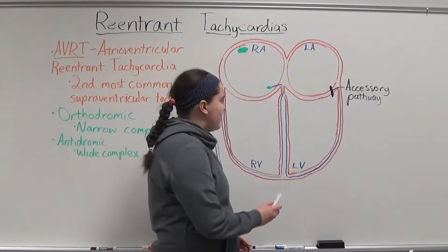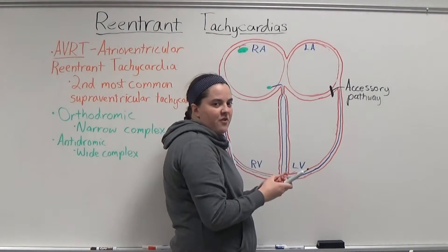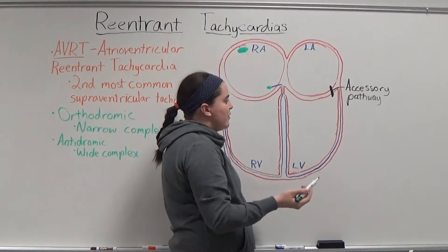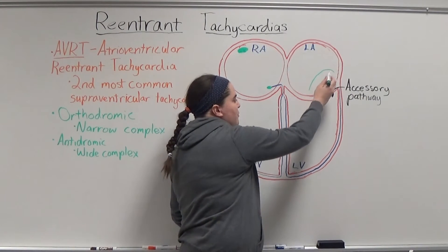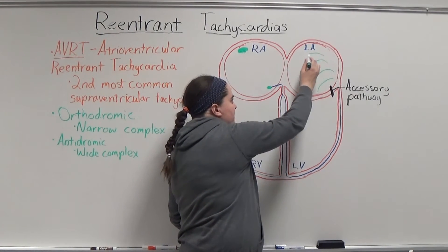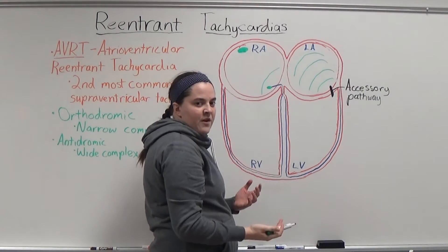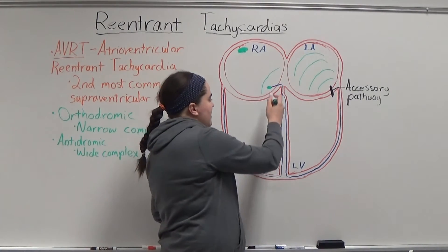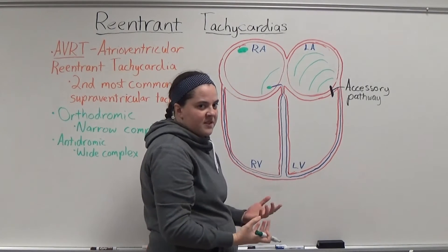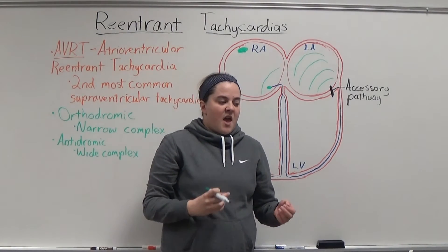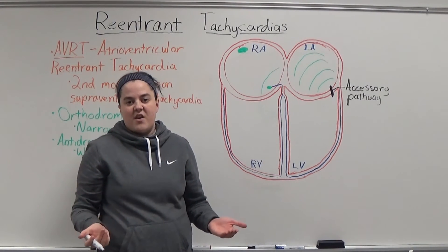For orthodromic AVRT, it uses the bundle of His and the Purkinje fibers, causing the ventricle to contract. However, instead of the impulse terminating, it's transmitted up the accessory pathway where it begins retrograde depolarization cell by cell of the atria. When the impulse hits the AV node, the cycle starts all over again. Because orthodromic AVRT uses the bundle of His and the Purkinje fibers, it's a narrow complex tachycardia, and because of how regular it is, it's often confused with sinus tachycardia.